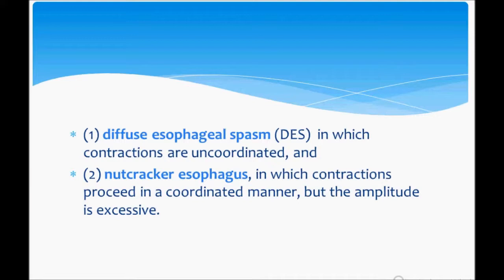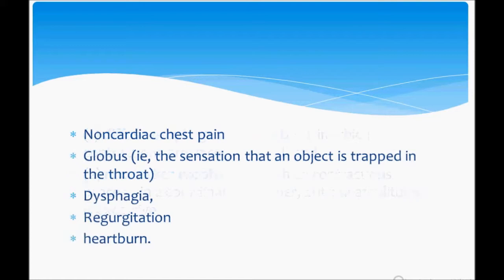How does it present? The salient symptoms are non-cardiac chest pain — the patient usually presents with chest pain — globus, which is a sensation that an object is trapped in the throat, dysphagia, regurgitation, and heartburn.